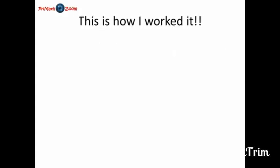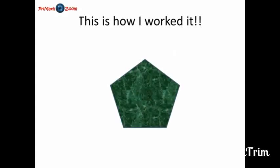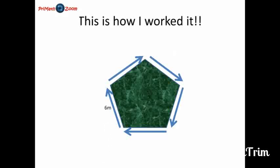Now, this is how I worked it. First, I drew up my pentagonal piece of land. Yes, all five sides have the same distance, the same length. And I know that to find the perimeter, I will have to be going around this piece of land. And in doing so, I actually gave one of my side a length.